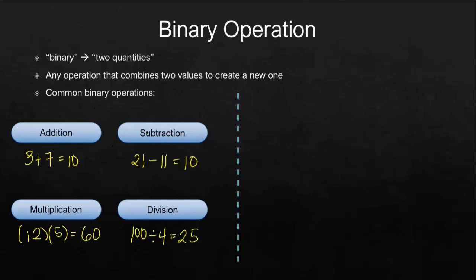So as you can see, for each operation, they are taking two terms at a time or two quantities at a time in order to produce a new value. But we are not limited to these four operations. We can define any operation using any symbol, as long as the definition is clearly stated.